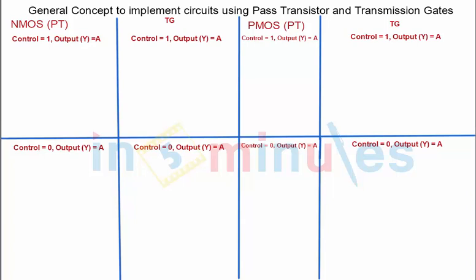Let's presume that we are using an NMOS transistor as a pass transistor. We have already seen that when NMOS or PMOS is used individually it's nothing but a pass transistor. Here we are going to make a circuit with NMOS as a pass transistor. It says that I want my output to be equal to A when my control is equal to 1. We know that an NMOS transistor turns on when a 1 — a logic high — is applied at its gate.